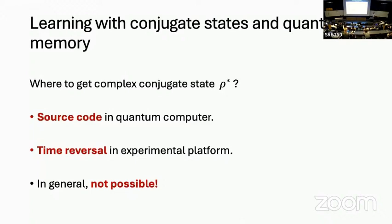There are two situations where you can obtain it. First, time reversal: for certain systems, if I negate the Hamiltonian and reverse backwards in time, I can prepare the complex conjugate state. Alternatively, if I'm preparing my state with a quantum algorithm on a quantum computer, it's a simple matter of complex conjugating every gate in the circuit, and this will generate the complex conjugate final state. So if I'm using a quantum algorithm, I have this resource available to me always.